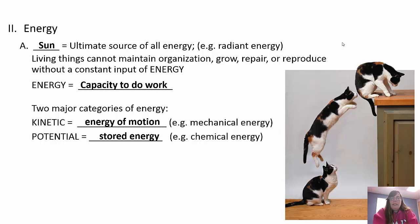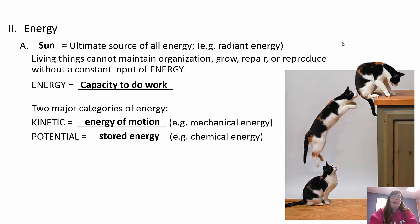A diver standing at the bottom of a ladder has potential energy; climbing transforms it to kinetic energy; standing at the top is potential energy again; diving into the pool is kinetic energy. Chemical energy is the energy we find in our food - that's stored energy. Mechanical energy, like walking or running, is kinetic energy. Potential energy is stored in chemical bonds, such as glucose and ATP. When chemical bonds are broken, energy is given off.